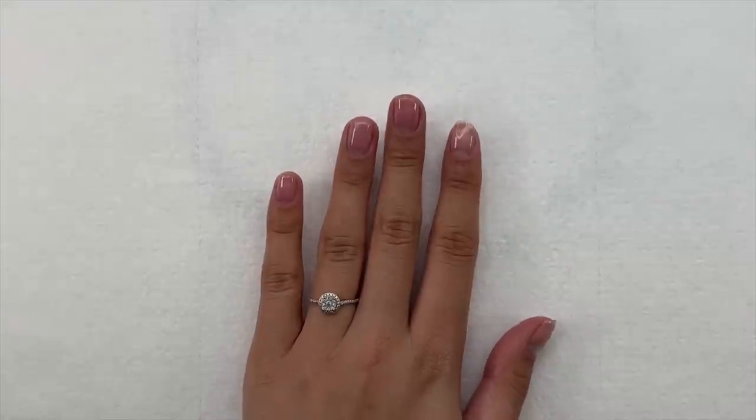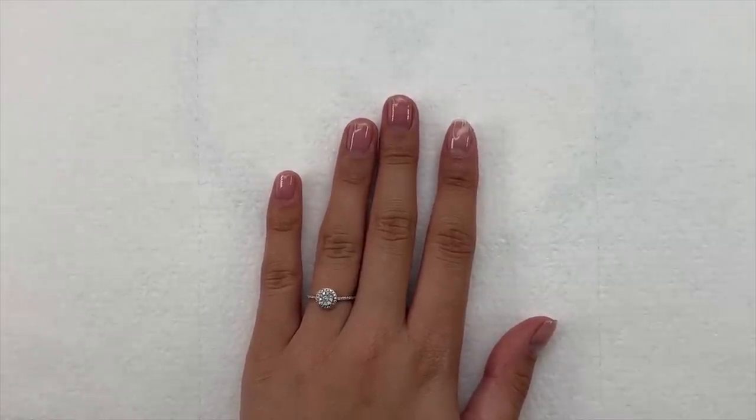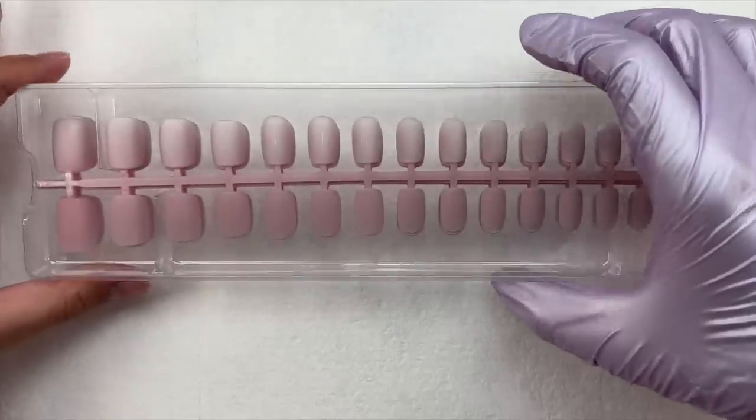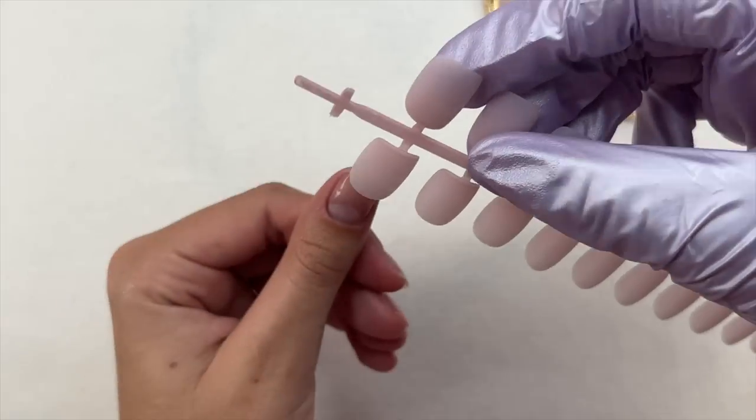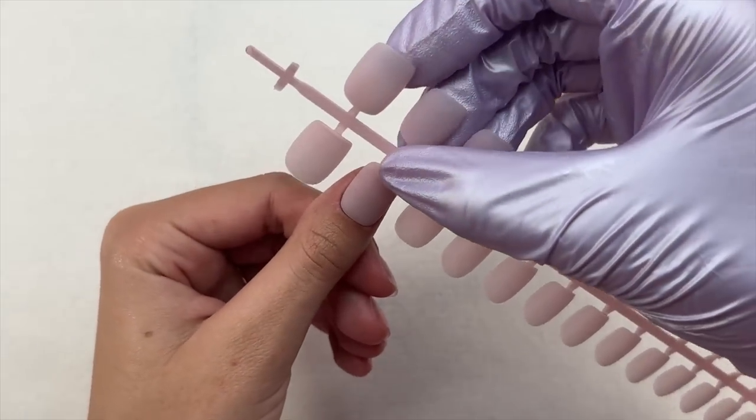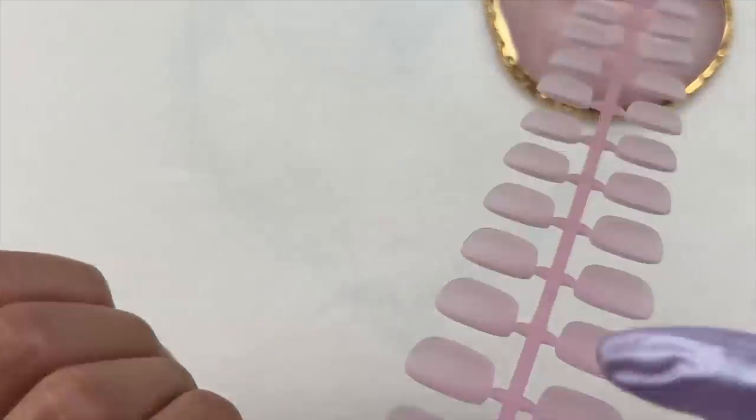That was really just the basics to nail prep. Of course you can also apply a base coat as well to give a better adhesion. You can apply an actual primer, a dehydrator, but I just went in with my peel off base coat because like I said I will be popping these nails off because I do have more content to film.